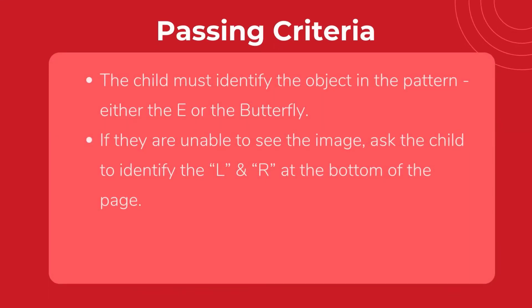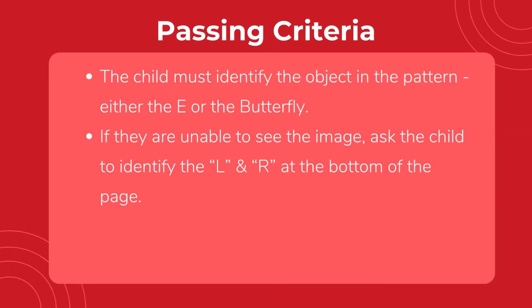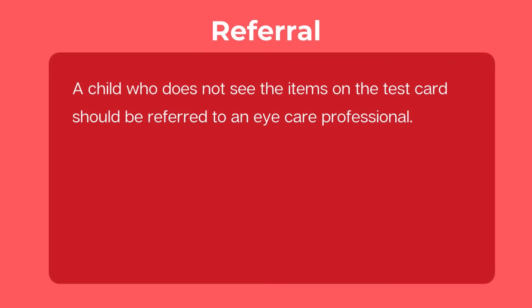The child must be able to identify the object on the card to pass. If they cannot see it, have them identify the L or R at the bottom of the test card. A child who cannot identify any of the items should be referred to an eye care professional.